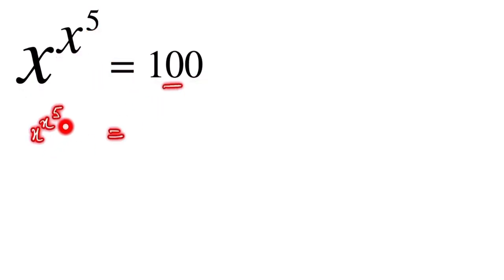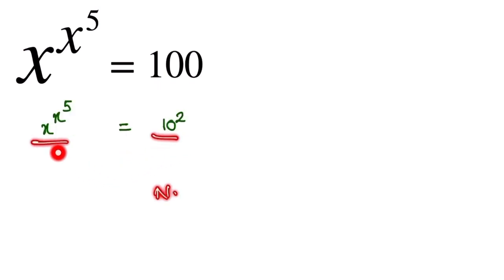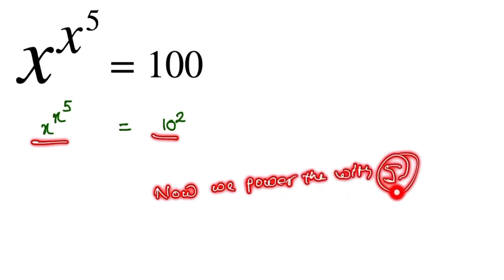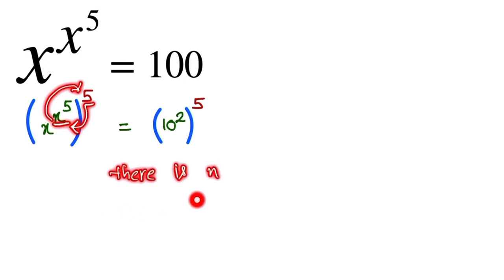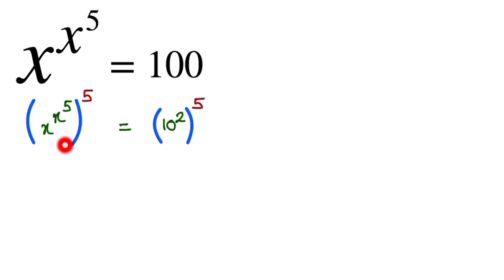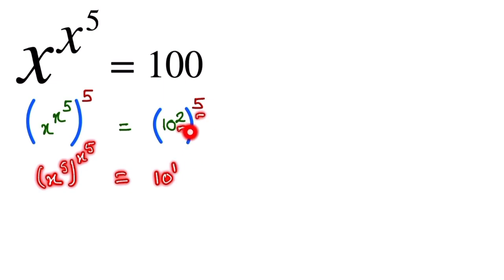So x to the power x to the power 5 equals 100 can be written as 10 to the power 2. Now we raise both sides to the power 5, just like this. When we exchange the position of the powers, there is no effect on the equation. So here x to the power 5, the whole power, is x to the power 5.